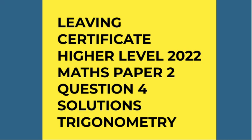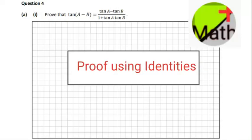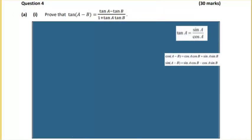Hello and welcome to Maths Plus. We're covering the Leaving Cert Higher Level 2022 Maths Paper 2, Question 4. We're on to trigonometry, and the first question requires us to prove the tan(a - b) identity. We'll use other identity rules to prove it.